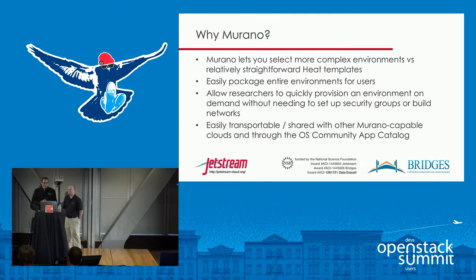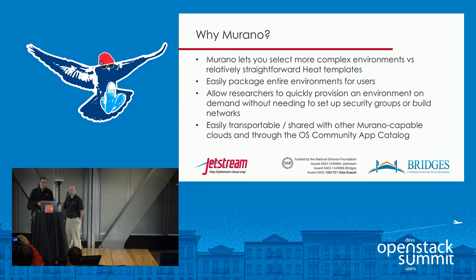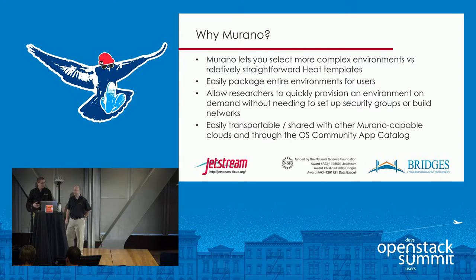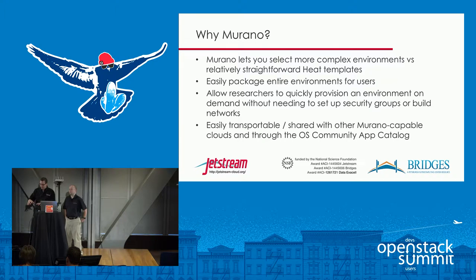Why Murano? Complex environments are easy to package and give to users. Users don't need to know how it works — they know what they're getting: this version of Python, this version of that code, this standard environment — but they don't have to do all the installs or upkeep. It's on-demand computing without needing security updates; they just spin up a new instance. It's also easy to translate and transport across clusters, so we're building a catalog shared across resources that users can contribute to. If a user comes in needing a specific software package, we work with them and put that into a Murano package — so the next person with the same request finds it already fulfilled.